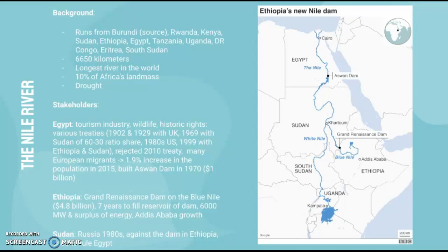It will take seven years to fill the reservoir, which is the main concern of other countries involved — because during that time they are essentially draining water sources from downstream nations, who see this as very unfair. The dam will create 6,000 megawatts of energy, creating a surplus that can be exported to surrounding countries. Addis Ababa, the capital, is also growing rapidly as an economic city, driving more demand for water, energy, and electricity.